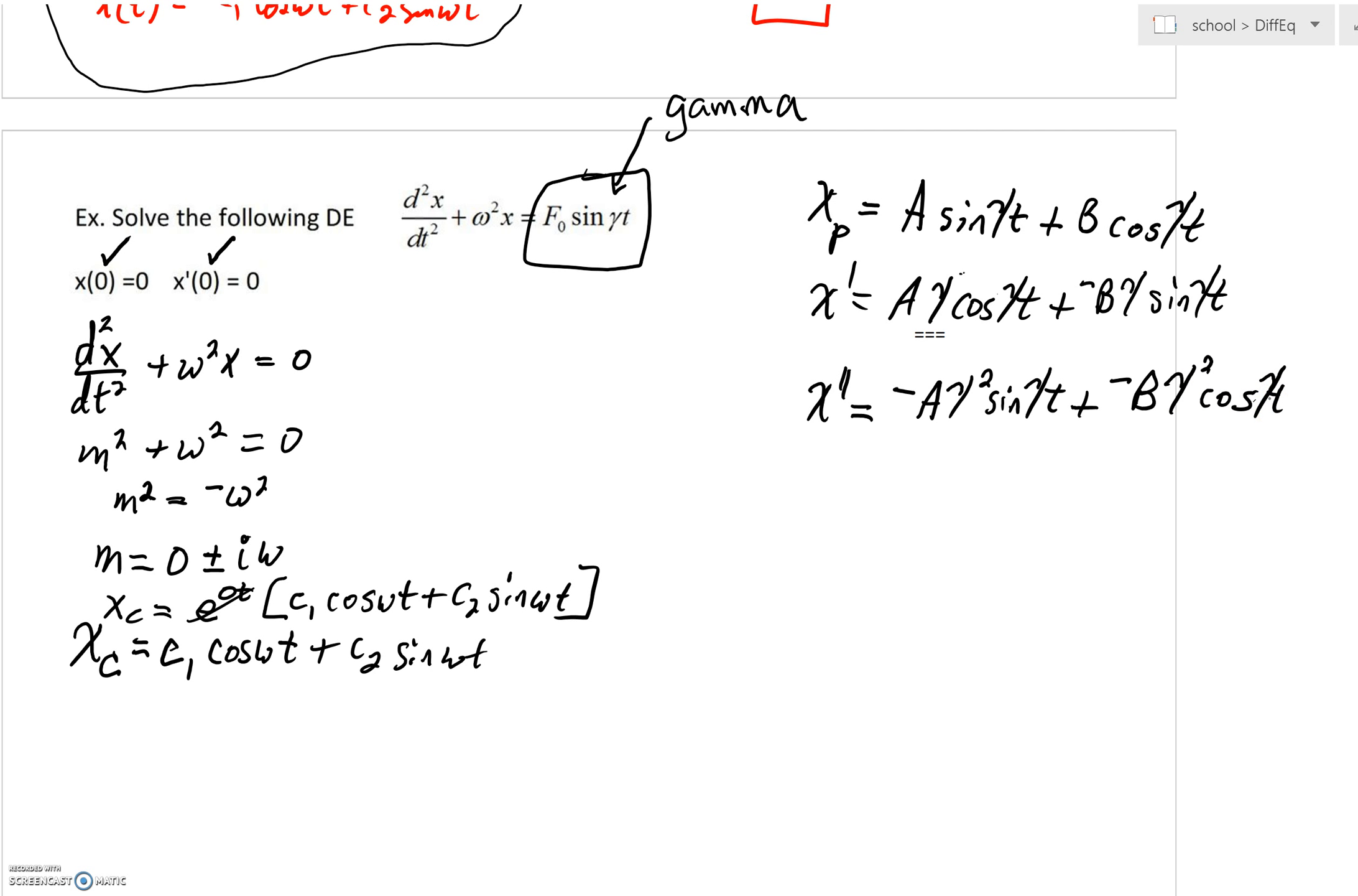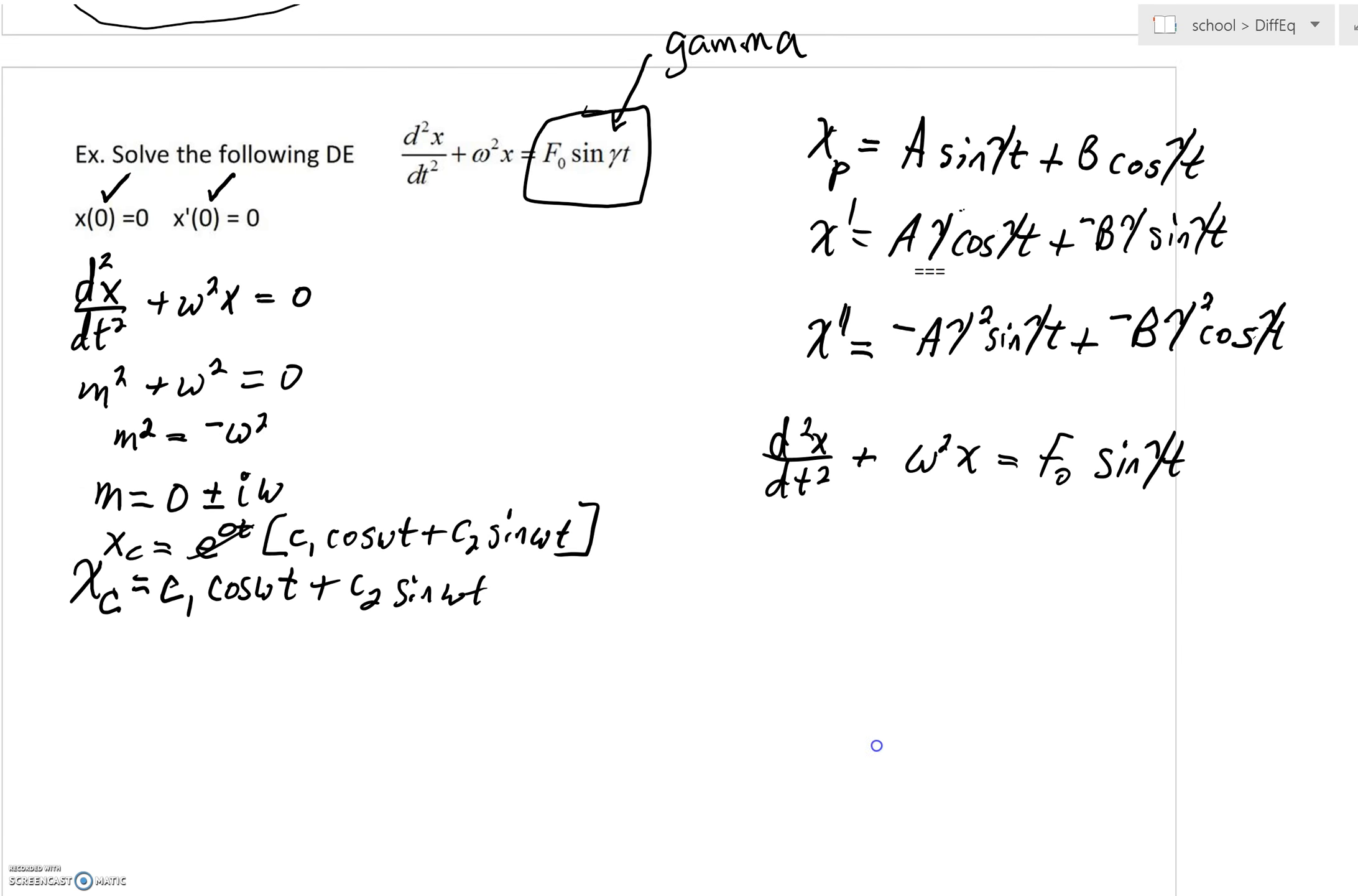We're going to revisit the original setup where we've got our second derivative of x with respect to t plus ω²x